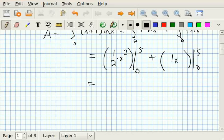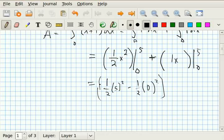So for this first one, now that I have the definite integral, I get 1 half times 5 squared minus 1 half times 0 squared. So that's the first one. I can put it in parentheses if I want.